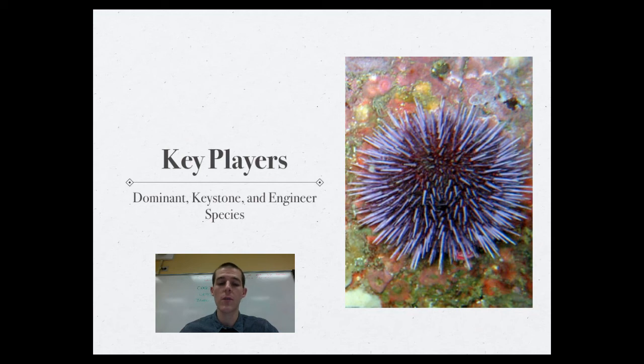And the last species in an ecosystem I want to talk about is an engineer species, which are species that actually alter the landscape of an ecosystem. So, examples of these would be beavers, they build beaver dams, they cut down trees, things like that. Elephants are known to push over trees and make paths through forests, so those would be examples of engineer species.